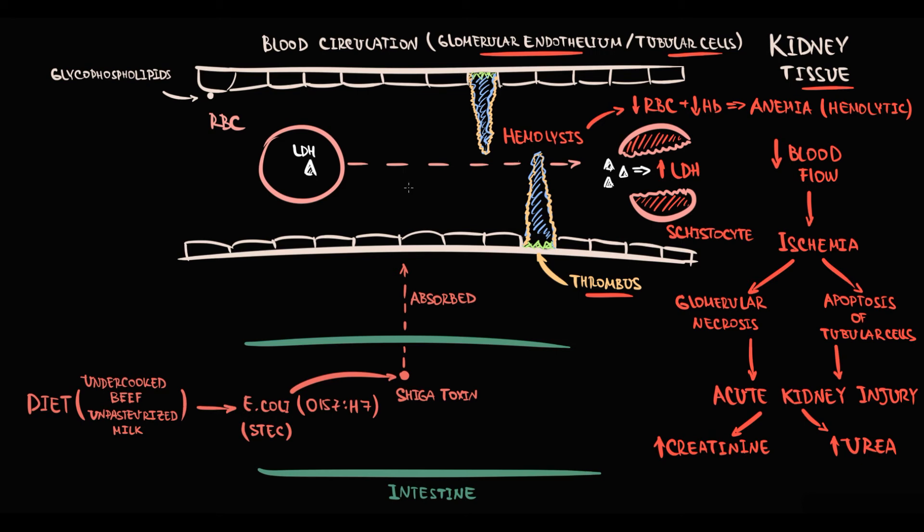As we see, because thrombi consist of platelets, a massive amount of thrombi requires a huge amount of platelets. Consumption of such huge amounts of platelets in thrombus formation causes decrease in total platelet count, a condition known as thrombocytopenia.